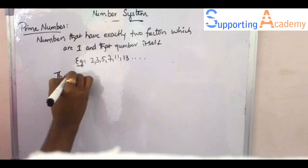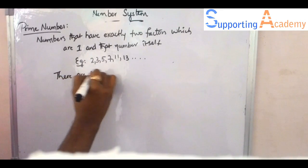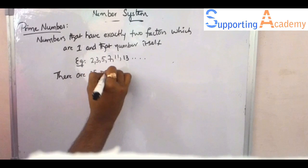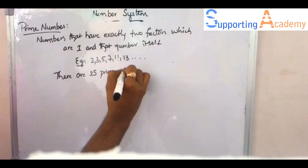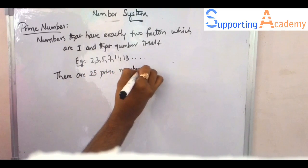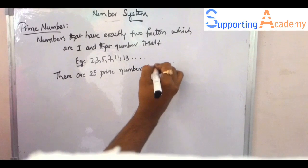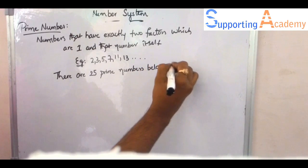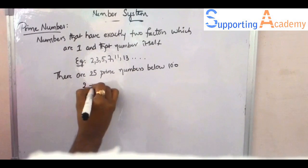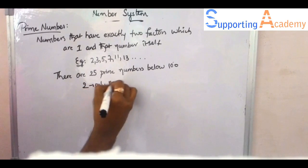There are 25 prime numbers between 1 and 100 and there are 15 prime numbers between 1 and 50. And every prime number, except 2, is an odd number as I have earlier told you.